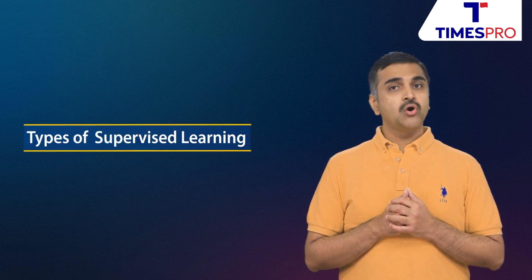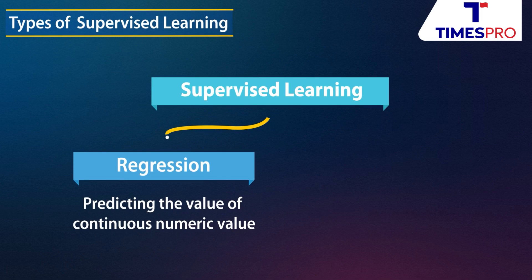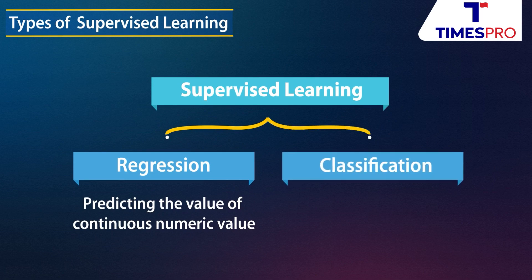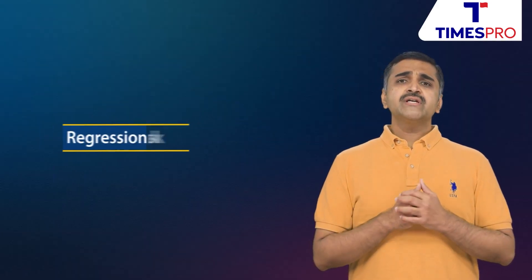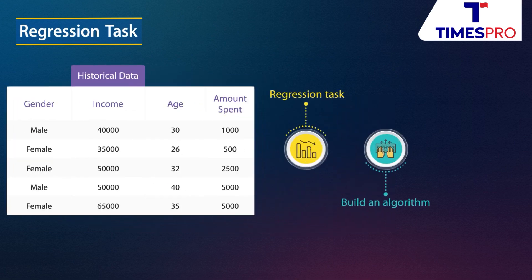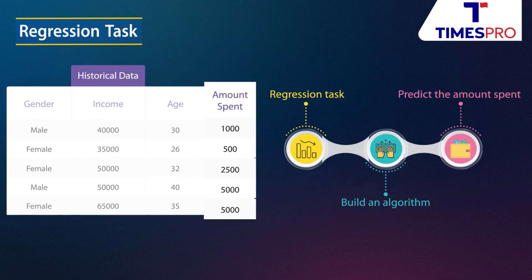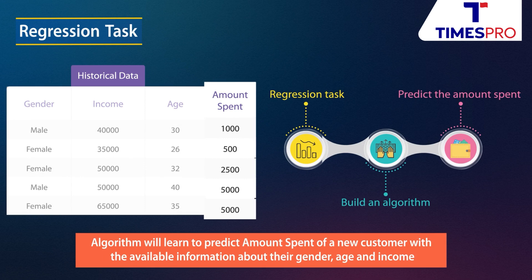To summarize: regression and classification are two techniques of supervised learning. Regression predicts the value of a continuous numerical variable, while classification predicts the class of a categorical column. A regression task uses historical data about customer demographics — gender, income, and age — to build an algorithm to predict the amount spent by a customer in a retail store. The algorithm learns to predict the amount spent by a new customer using their gender, age, and income.